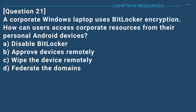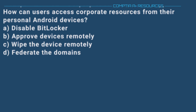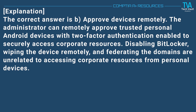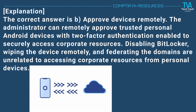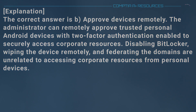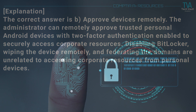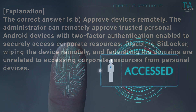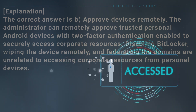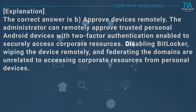Question 21. A corporate Windows laptop uses BitLocker encryption. How can users access corporate resources from their personal Android device? A. Disable BitLocker. B. Approve devices remotely. C. Wipe the device remotely. D. Federate the domains. The correct answer is B. Approve devices remotely. The administrator can remotely approve trusted personal Android devices with two-factor authentication enabled to securely access corporate resources. Disabling BitLocker, wiping the device remotely, and federating the domains are unrelated to accessing corporate resources from personal devices.